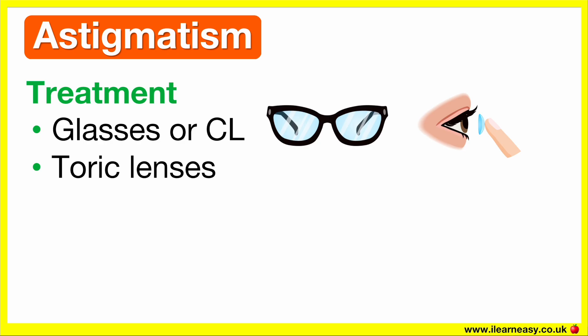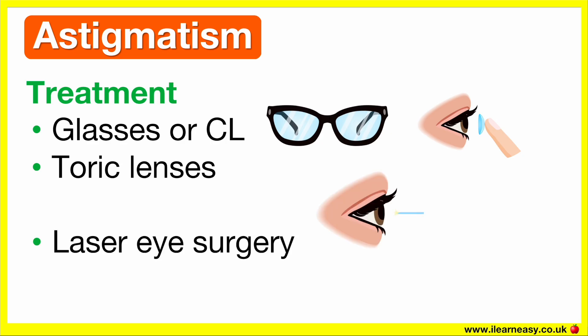The treatment for astigmatism is glasses or contact lenses. Special types of lenses are used, known as toric lenses. These lenses compensate for the uneven curve of the cornea. Laser eye surgery may also be an option, which reshapes the cornea to allow light to focus directly onto the retina.